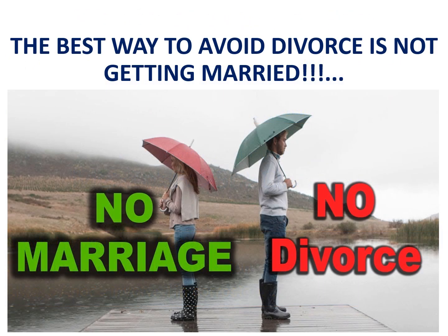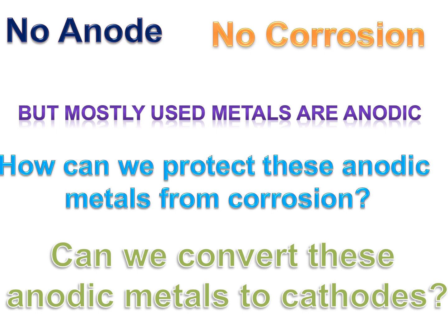The best way to avoid divorce is not getting married — just a joke! If you are not involved in the marriage system you never get divorced. Taking this as an example: if a metal doesn't act as an anode, it is never involved in corrosion. But most commonly used metals like iron, magnesium, and zinc are anodes — they have anodic nature.